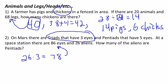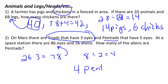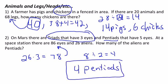Every time we replace a triad with a pentiad, we go from three eyes to five eyes, so we're adding two eyes each time. The difference is eight, so we do eight divided by two, which is four. That means we need four pentiads, so the answer is four pentiads. The number of triads would then be 26 minus four, which is 22.